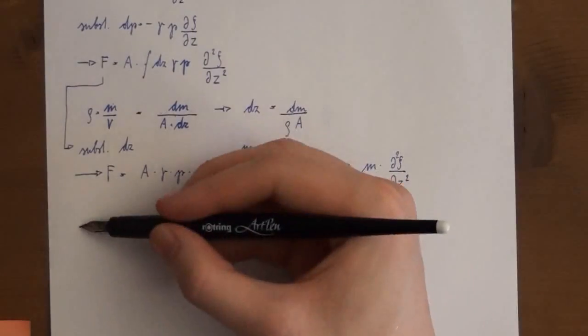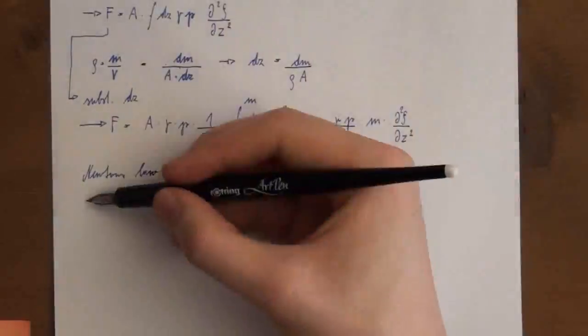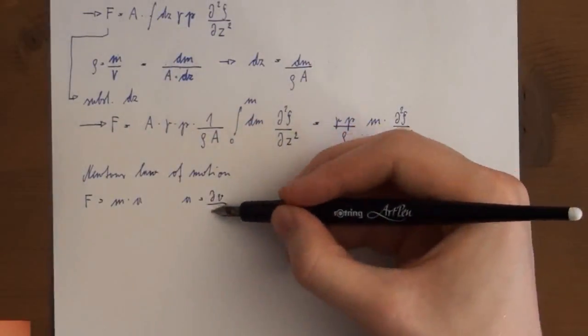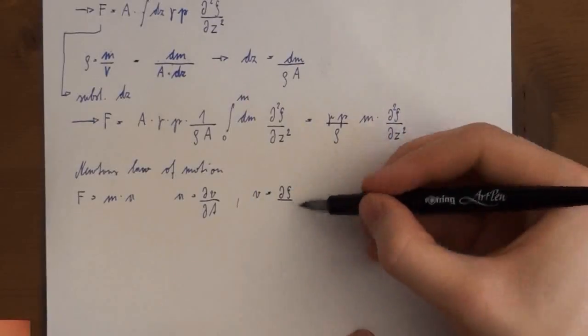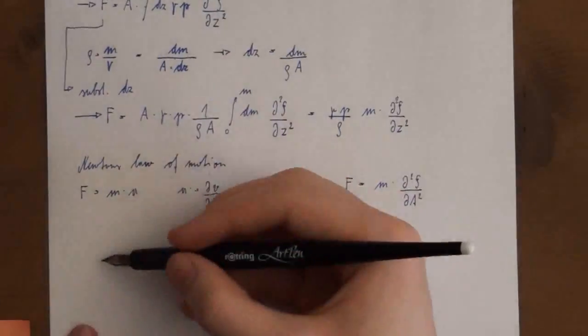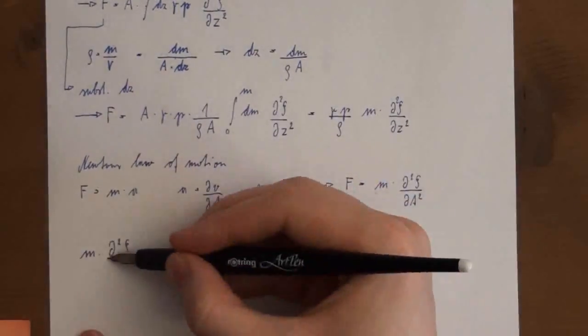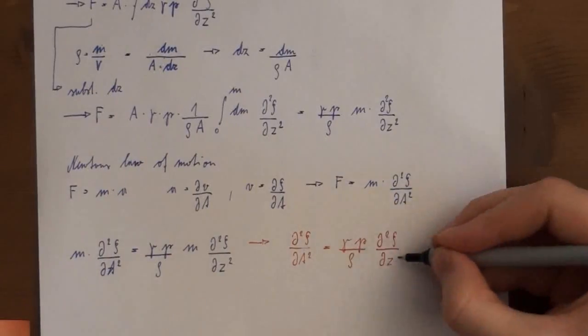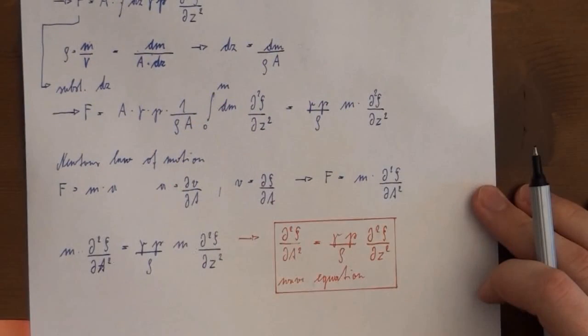From Newton's law of motion we know that a force also equals mass times acceleration. An acceleration is the derivative of velocity with respect to time. And likewise velocity is the derivative of distance. But we already know that distance is represented by the function zeta. Thus we only need to compare both forces and arrive at the wave equation.